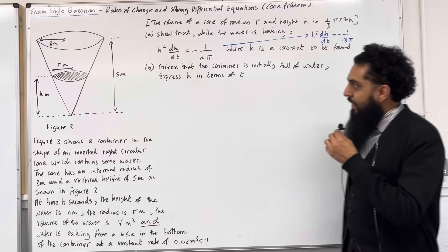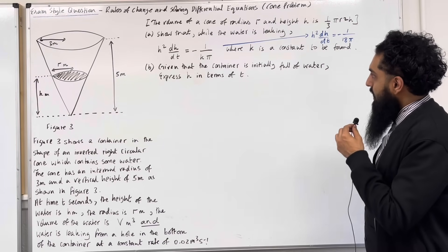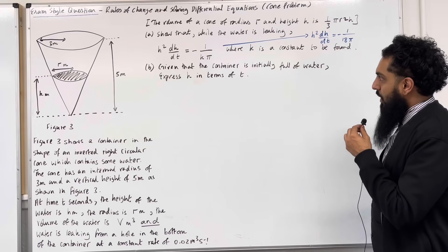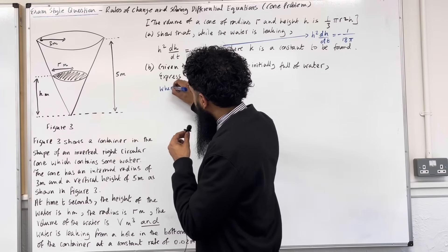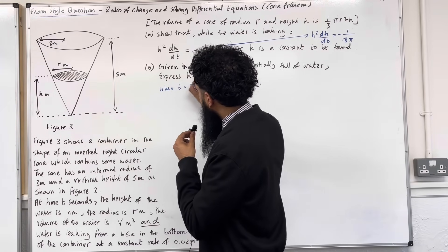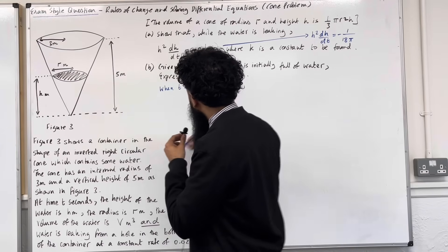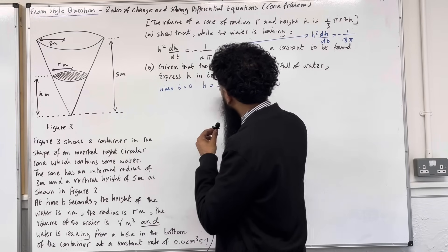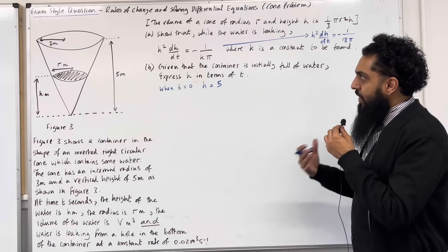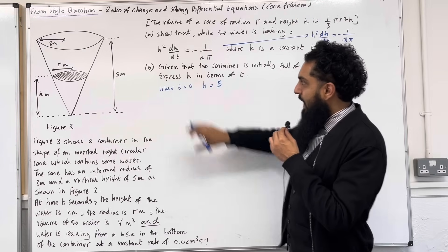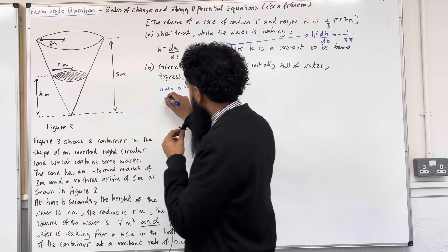For Part B, we are told the container is initially full of water, so when t = 0 the height of the water is 5 metres. That is our boundary condition. We need to solve the differential equation h² dh/dt = −1 over 18π to express h in terms of t.